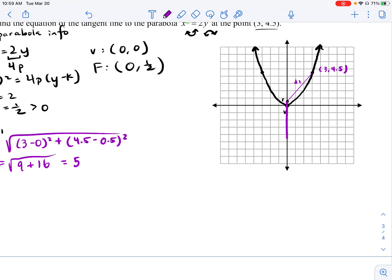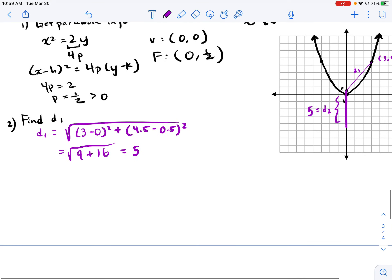In other words, the distance from my focus down to where this tangent line is going to intersect my axis of symmetry, this is going to be equal to 5 as well, since they have to be congruent.